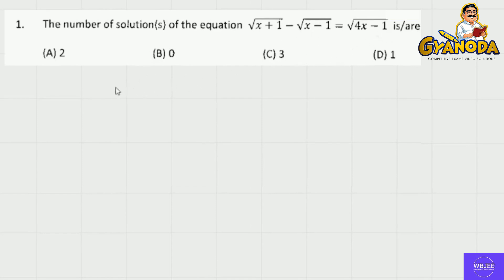Square both sides. Using the formula (a minus b) whole square equals a square plus b square minus 2ab, we get x plus 1, x minus 1 which gives x square minus 1, and on the right side 4x minus 1.